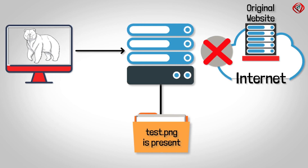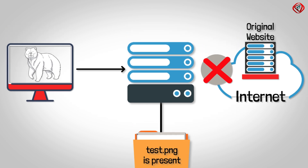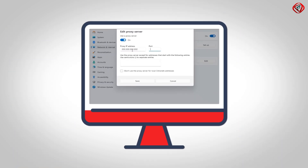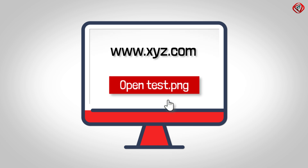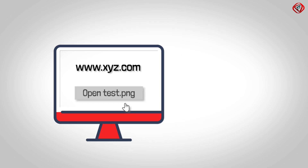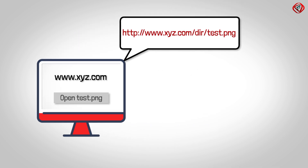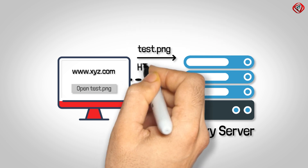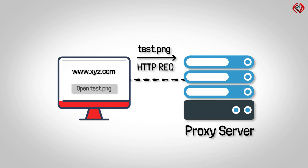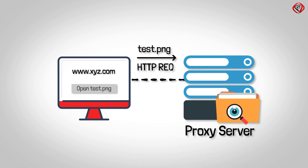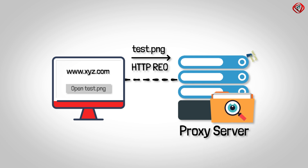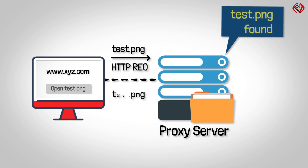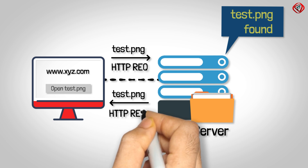Let us see how it works. Suppose your web browser is set up to use a proxy server and you are requesting a picture test.png from a website. The web browser sets up a TCP connection to the proxy server and asks for the image test.png via an HTTP request message. The proxy server checks if it already has a copy of the image; if it does, it sends the image back to the web browser via an HTTP response message.